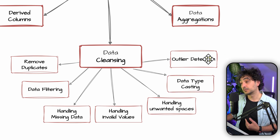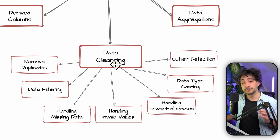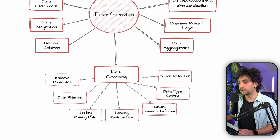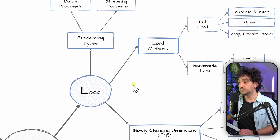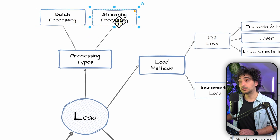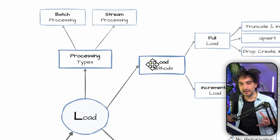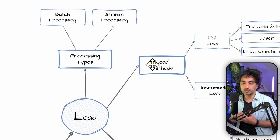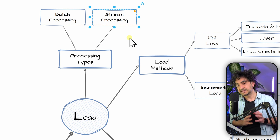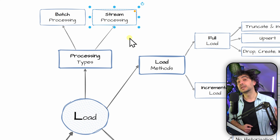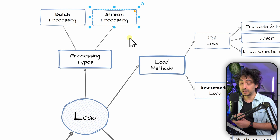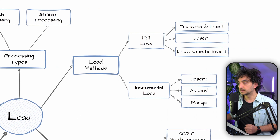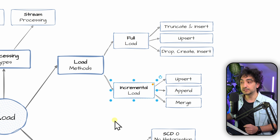Data cleansing is also a very important transformation type, covering: removing duplicates, data filtering, handling missing data, handling invalid values, removing unwanted spaces, casting data types, and detecting outliers. Moving on to Load — we have two processing types: batch processing, where we load the data warehouse in one large batch, typically scheduled once or twice a day; and stream processing, where changes from the source are processed as soon as possible for a real-time data warehouse.